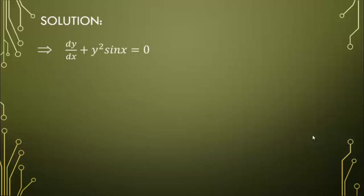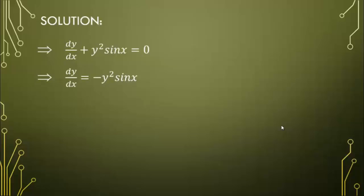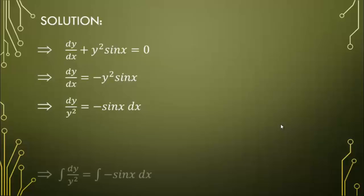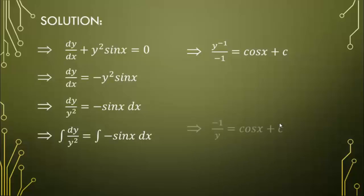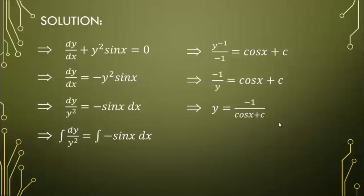We will transform y' into dy/dx. So the equation will now be dy/dx plus y² sin(x) = 0. Transposing the second term gives dy/dx = −y² sin(x). Multiplying both sides by dx and 1/y² gives dy/y² = −sin(x) dx. Integrating both sides yields y⁻¹/(−1) = cos(x) + C, which simplifies to −1/y = cos(x) + C. Therefore, y = −1/(cos(x) + C).